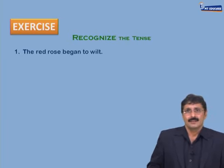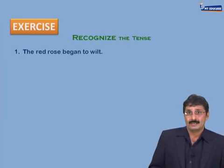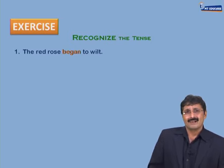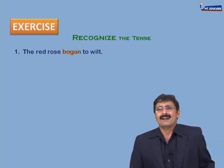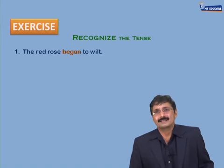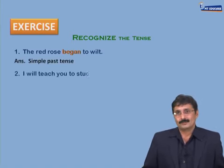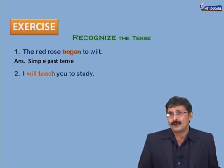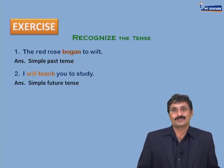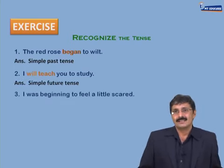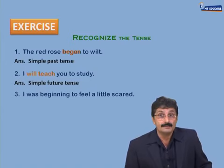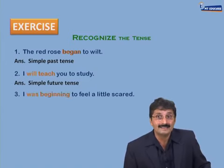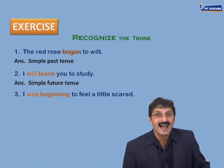Let's have a look at some sentences to identify the tense. 'The red rose began to wilt' — the verb 'began' is a single verb with no auxiliary, so it is simple past. 'I will teach' — 'will plus verb,' so it is simple future. 'I was beginning' — 'was' plus verb with ING: was/were/will be likho, verb ke saath ING jodo — it is past continuous tense.